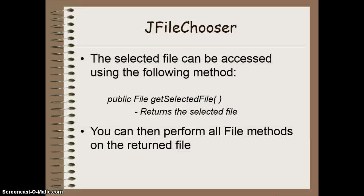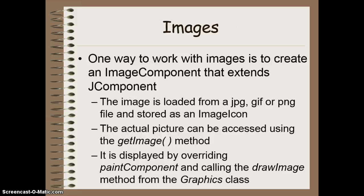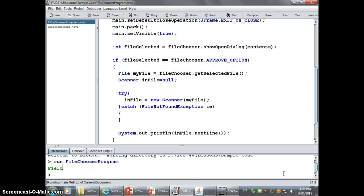The second thing we want to talk about is how to use images. There are several ways we can deal with images. The way we're going to do it in this course is by creating an image component that extends the JComponent class, just like all the other components we've been creating on our own. We can load an image from either a JPEG, GIF, or PNG file and store it as an ImageIcon. We can then take that ImageIcon object and access the actual image by using the getImage method of the ImageIcon class. We can display it by overriding the paintComponent method of JComponent and calling the drawImage method from the Graphics class.